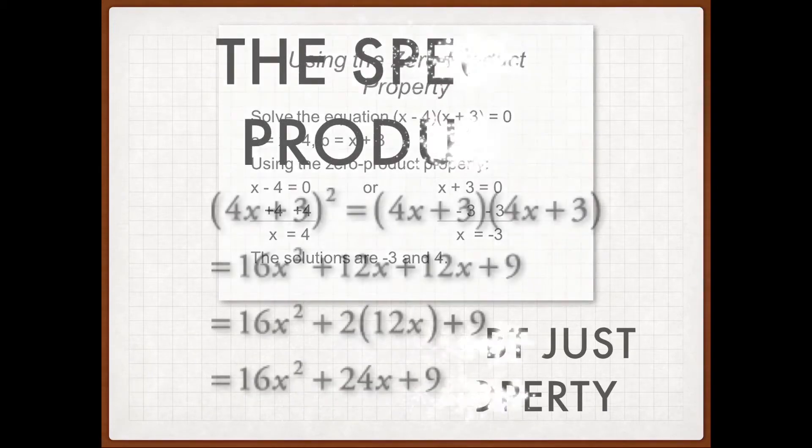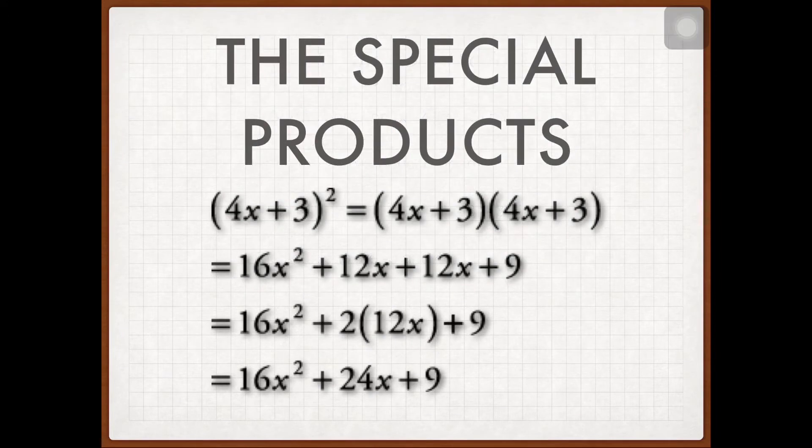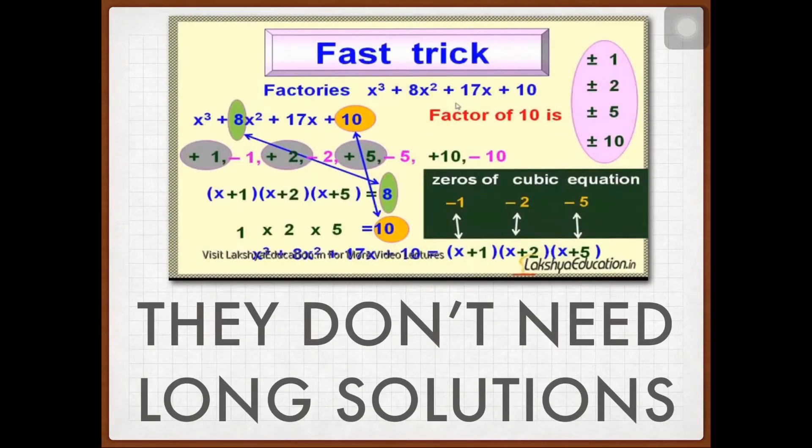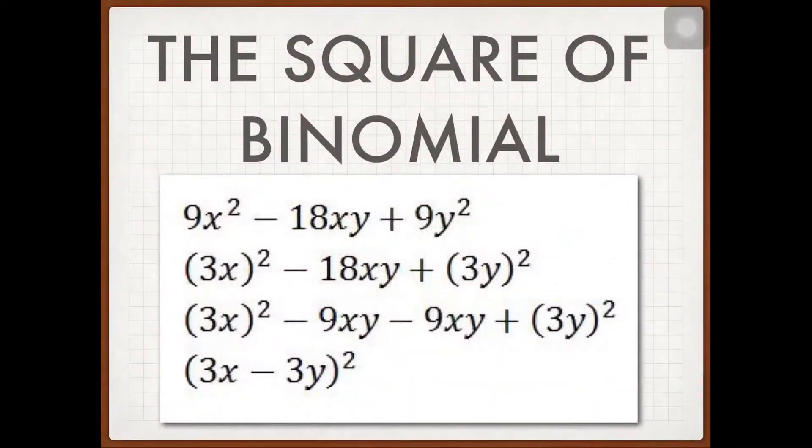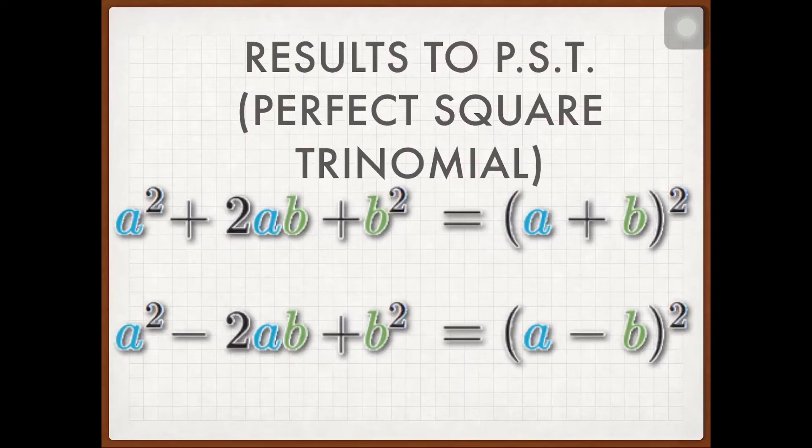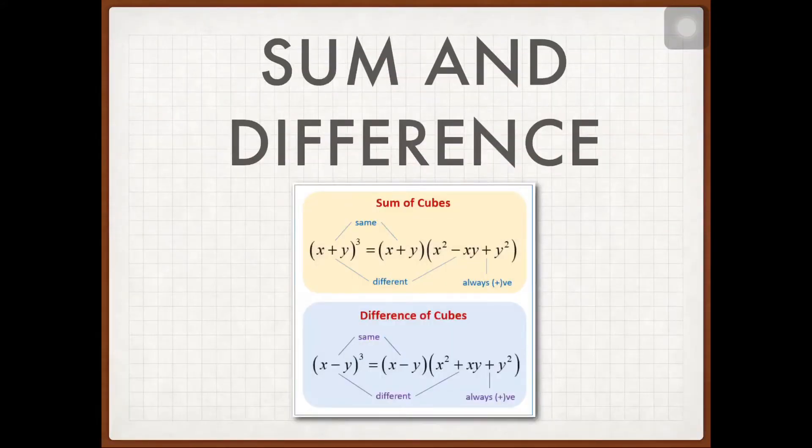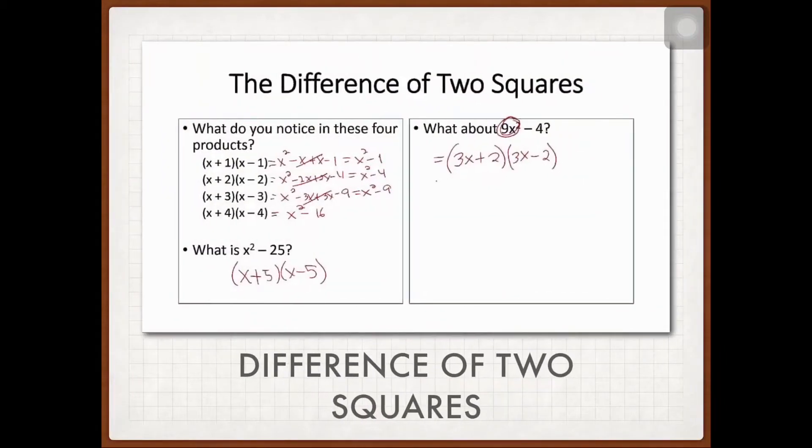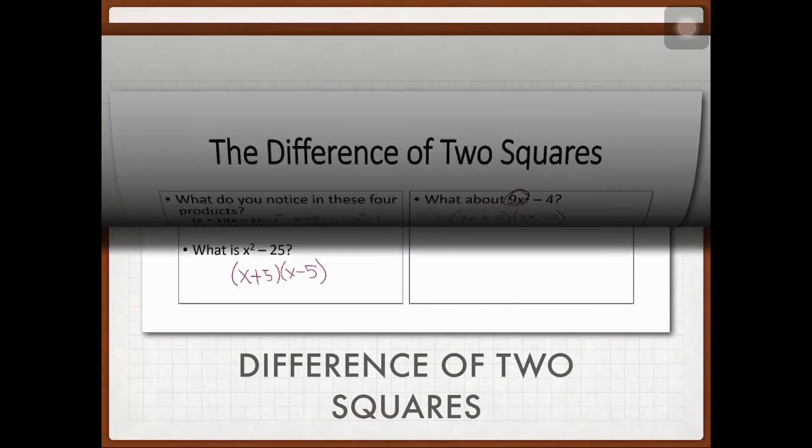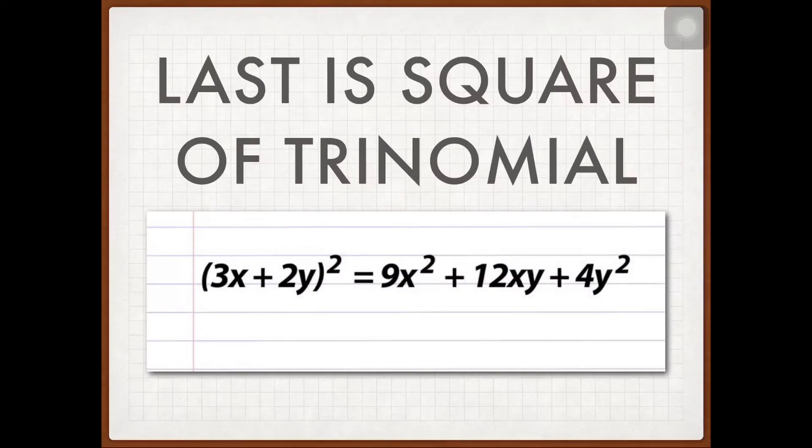The special products, they don't need long solutions. The square of binomials, the square of binomials, results to PST. Sum and difference, difference of two squares, difference of two squares. Like the square of trinomials.